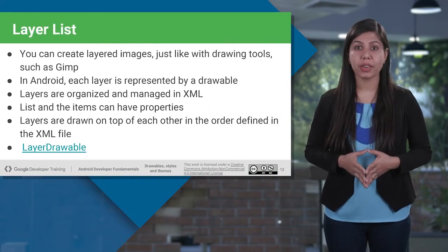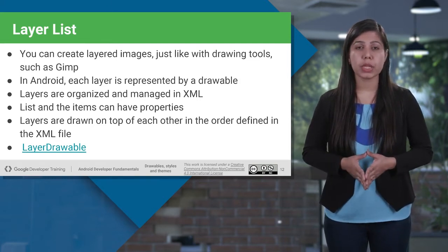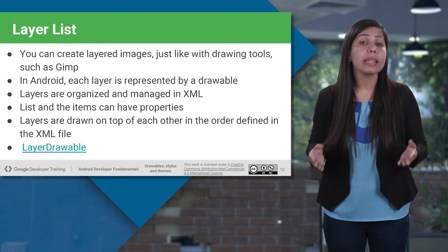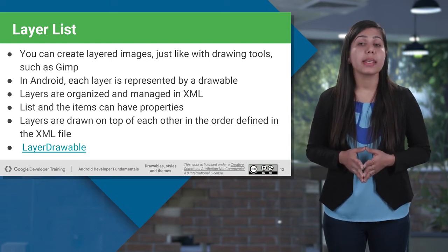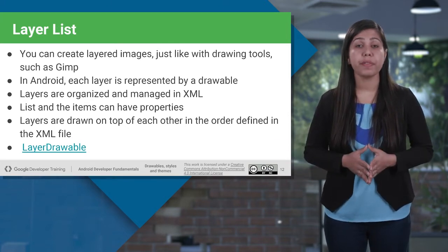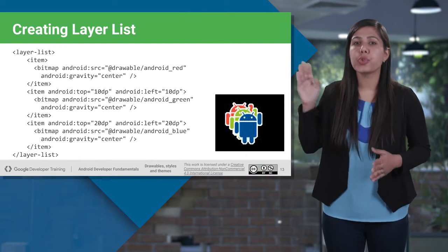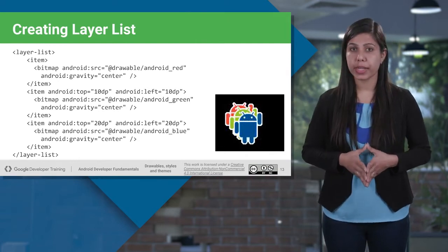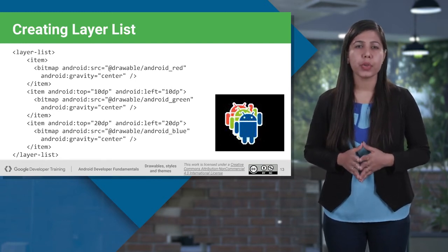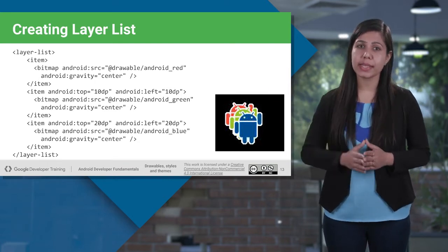Sometimes we want to stack graphics on top of each other — for example, gaming apps use this extensively. We do this by listing the graphic layers in XML. Both the items in the list and the list itself can have properties, and their stacking order is defined by the order items appear in the list. The class which defines an object for layer graphics is LayerDrawable. The root tag of this drawable XML file is a layer-list, which contains child drawables as items. We define each item, reference the drawable file, and give each one a unique position.